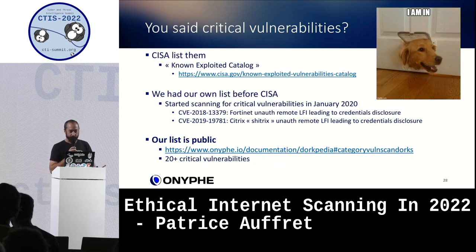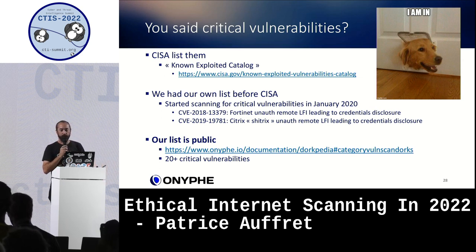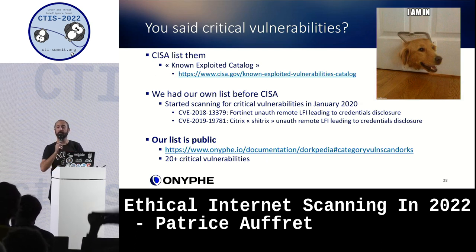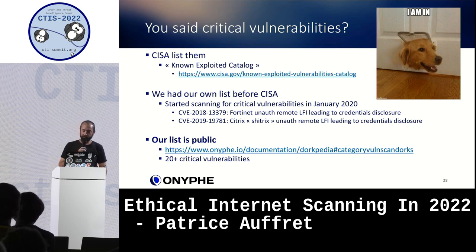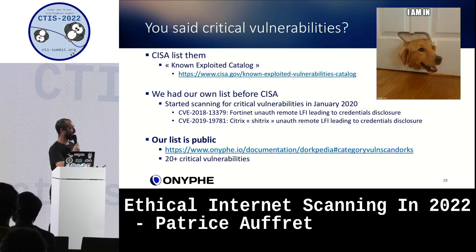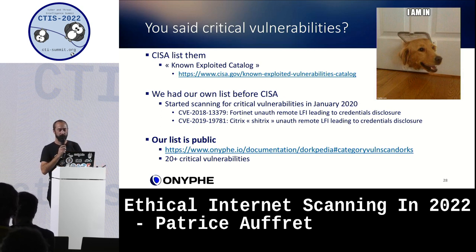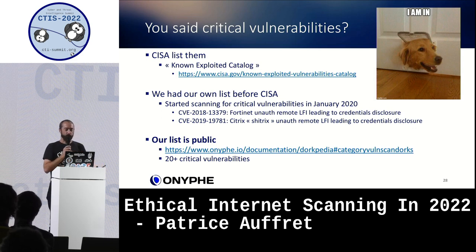The CISA, a US government organism, published a Known Exploited Vulnerabilities catalog — a list of vulnerabilities known to be actively exploited by cybercriminals. We had a similar internal list before CISA, back in January 2020. The CISA catalog was released around 2021 or early 2022.